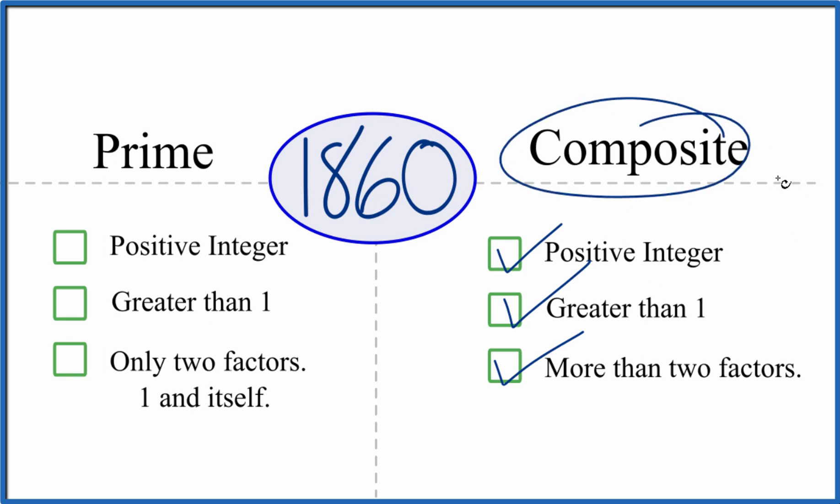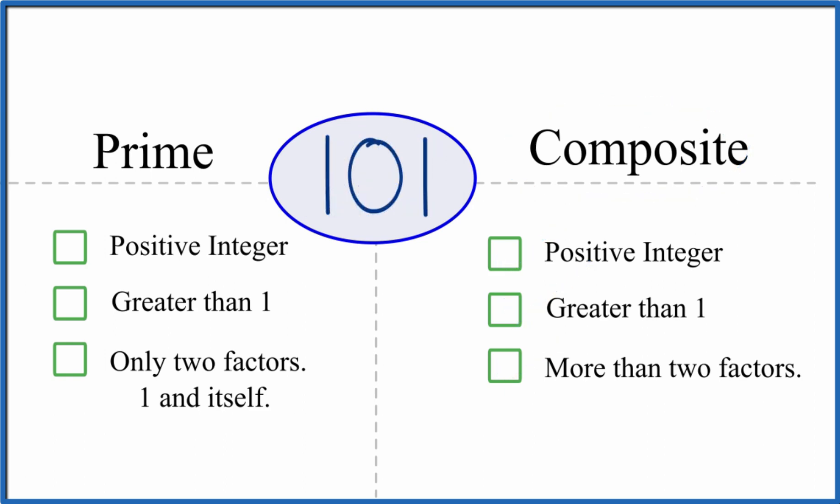So for 101, let's see if it's prime or composite. It's a positive integer, it's greater than 1, and then we'd have to think about the factors that go into 101. We know that 1 times 101, that equals 101. Then we just have to figure out, are there any numbers that go into 101?